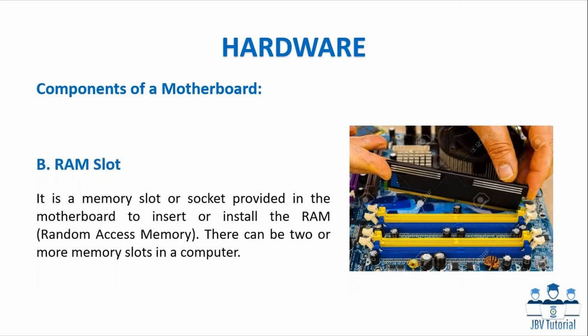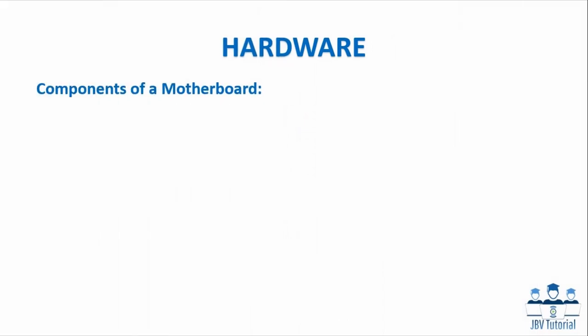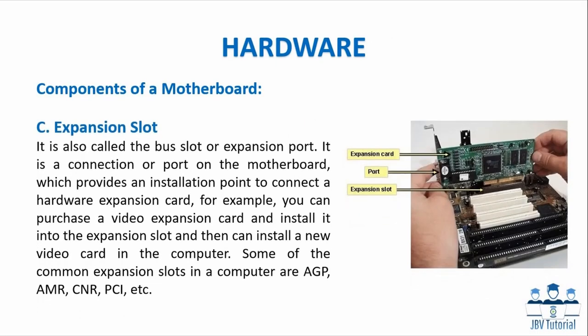RAM slot: It is a memory slot or socket provided in the motherboard to insert or install the RAM, random access memory. There can be two or more memory slots in a computer. Expansion slot: It is also called the bus slot or expansion port. It is a connection on the motherboard which provides an installation point to connect a hardware expansion card. For example, you can purchase a video expansion card, install it into the expansion slot, and then install a new video card in the computer. Common expansion slots include AGP, AMR, CNR, and PCI.